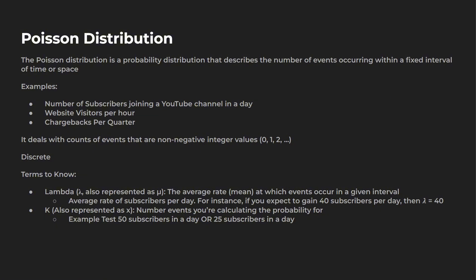A few terms you should know before jumping into Python. Lambda, which you'll also see represented as mu, is the average rate at which events occur within a given interval. For example, my channel gets about 40 subscribers per day, so my lambda value would be 40.